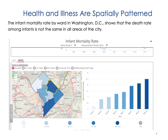We can see this dramatically by looking at the infant mortality rate by ward in Washington, D.C. The death rate among infants is not the same in all areas of the city. In some areas the infant mortality rate is close to 1, and in others it is 12 and a half. In the very light blue areas it's basically 1 per 10,000; in the darkest wards it's 11 to 12 and a half — about 11 to 12 times higher in some areas compared to others, and these areas might just be a mile or two apart.